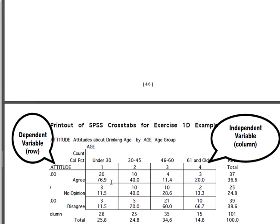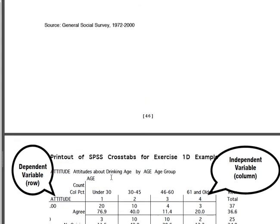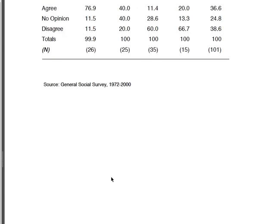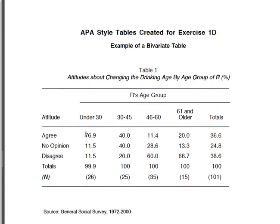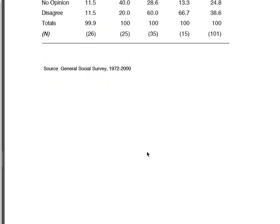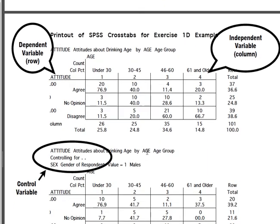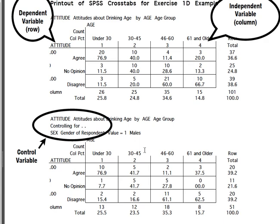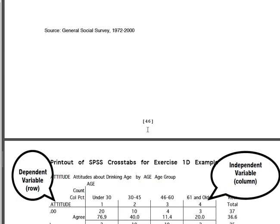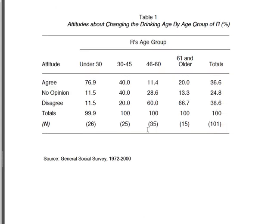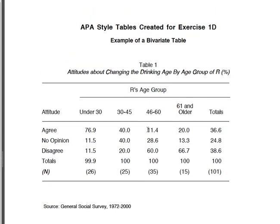If we look at these numbers — for those under 30, 76.9% of respondents agreed. Let's look in our bivariate table — there it is: 76.9% under 30, agreed. You just continue on with that based on the rows and columns, using the data contained in your SPSS output. You don't have to do any math at all. All you need to do is read and interpret the SPSS crosstab output and place it in the correct format, which is an APA style table. It's just that easy.